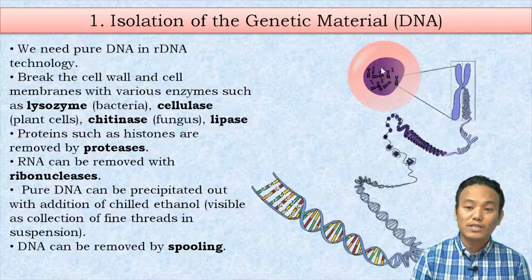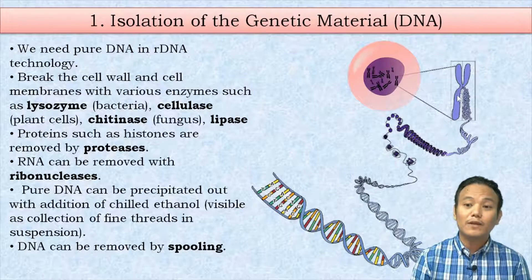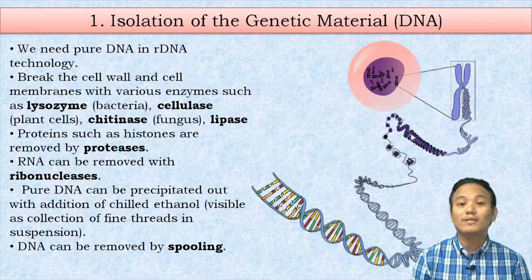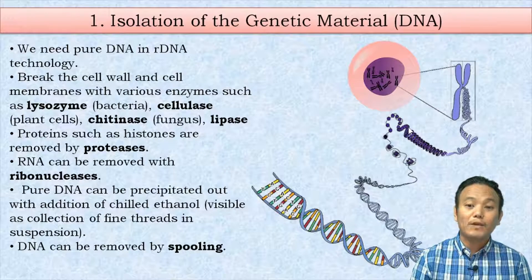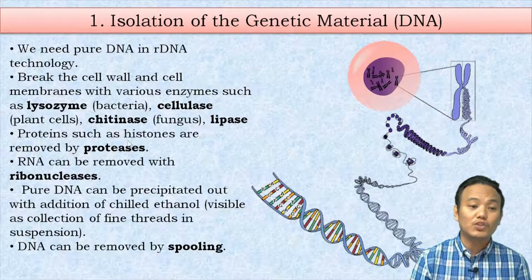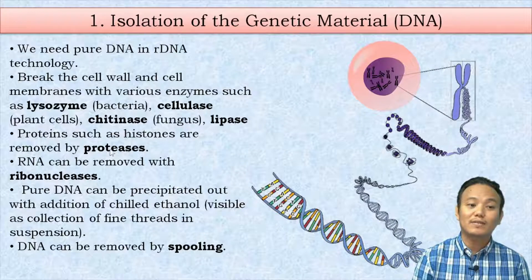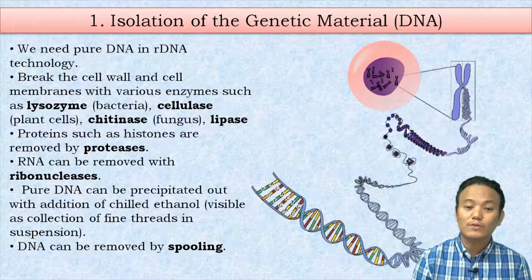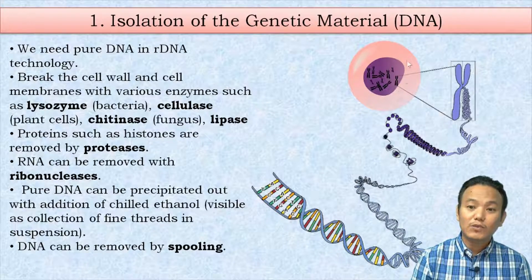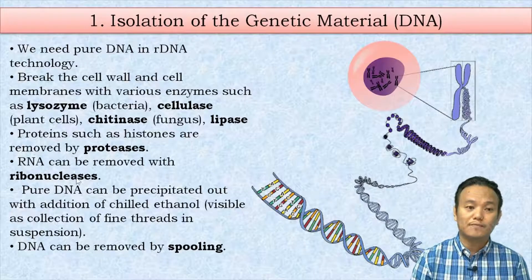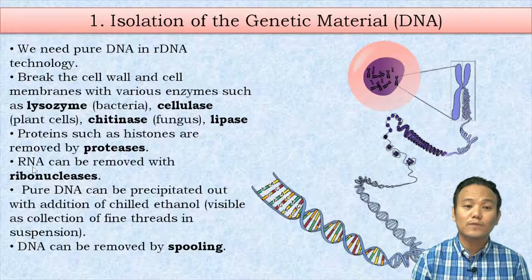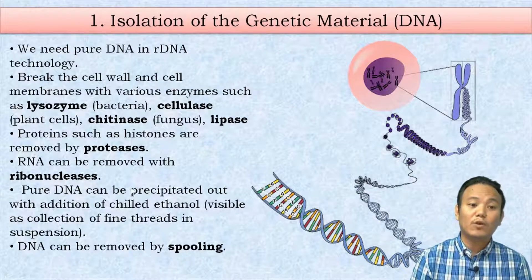After breaking open the cell we have DNA, but it is not in pure form because it is associated with structural proteins such as histones. To remove the histones we treat the mixture with proteases — enzymes which can break down protein molecules. Inside the nucleus we also have RNA molecules like tRNA, mRNA, and rRNA, which can be removed with ribonuclease enzyme, which digests RNA but not DNA.